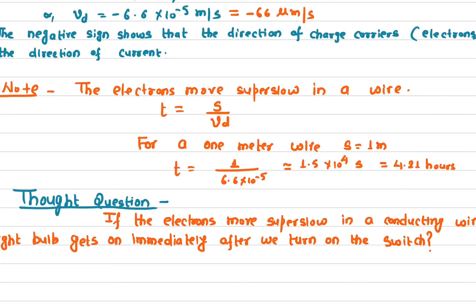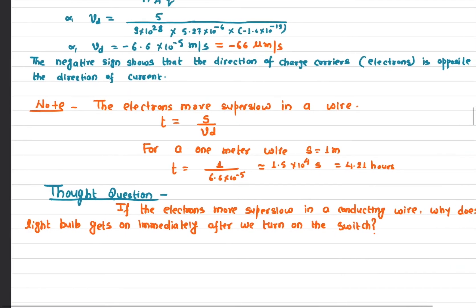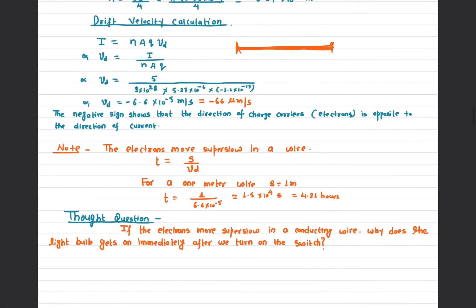If you solve it and convert into hours, you get 4.21 hours. So for an electron to travel one meter along the wire, it takes about four and a quarter hours — slightly more than four hours.